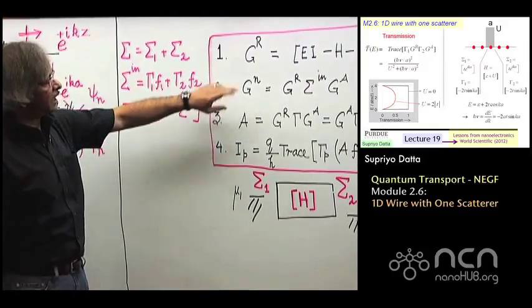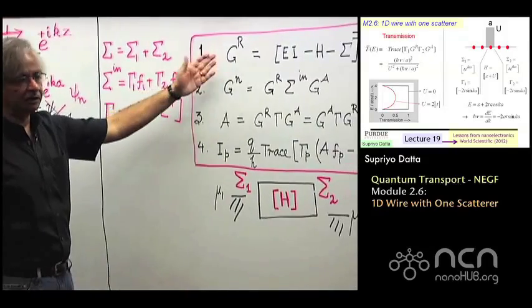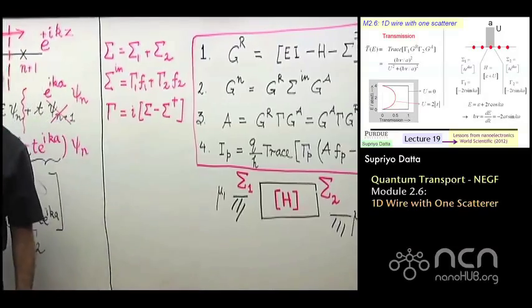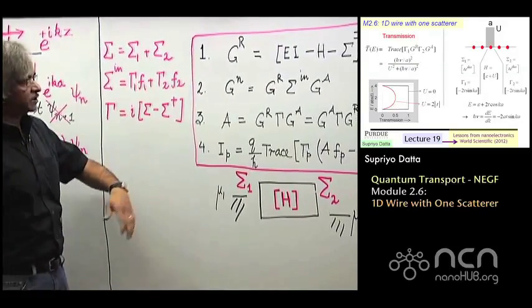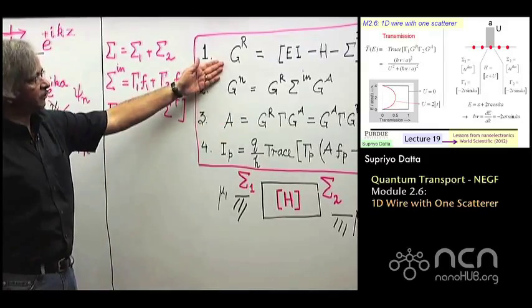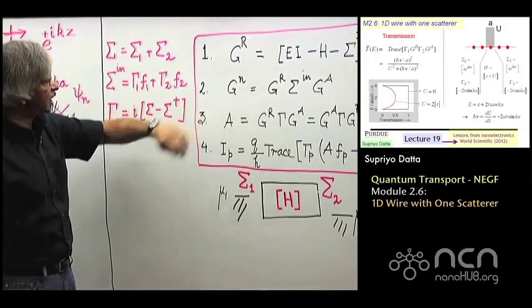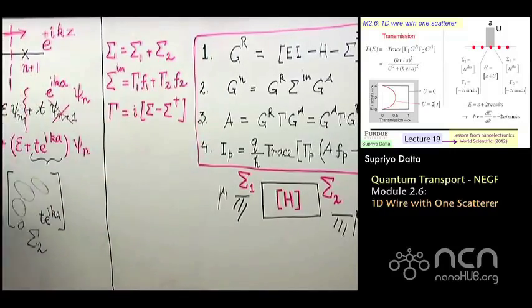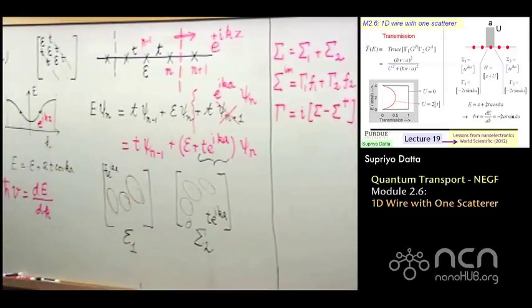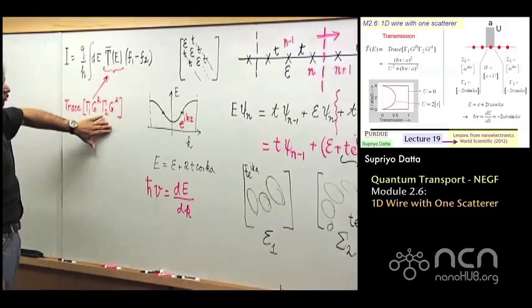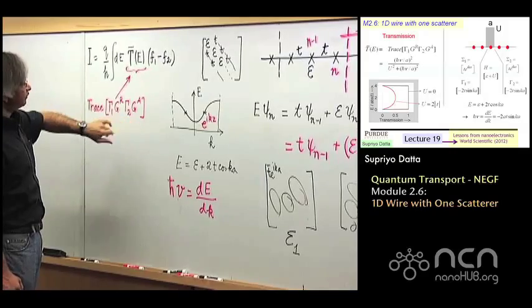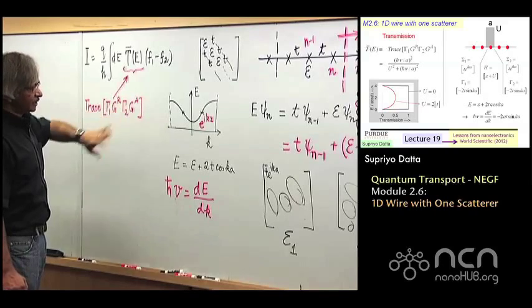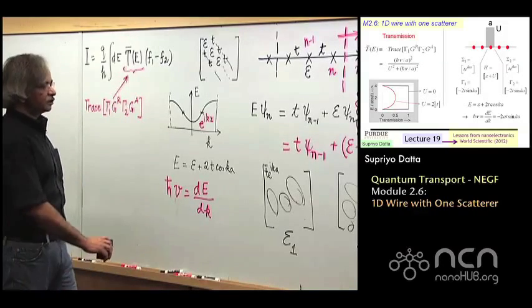You go to the computer and ask it to calculate G_R — it involves matrix inverses. The size of the matrix depends on the number of points along your wire; say 100 points gives a 100×100 matrix, easily inverted. Once you have G_R, you can calculate currents or, for our purpose, calculate the quantity trace of gamma_1 G gamma_2 G_A. If you calculate this and plot it, it would look something like this.